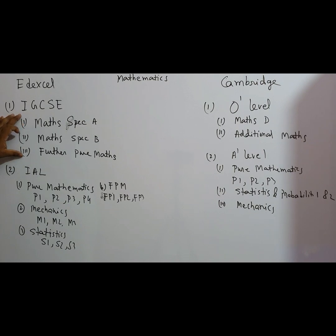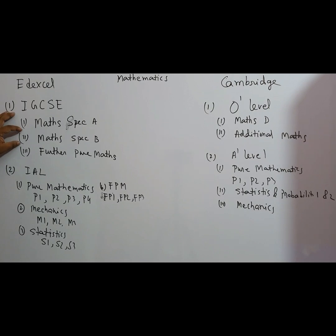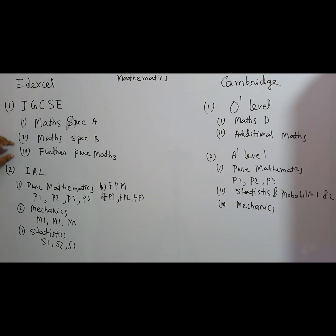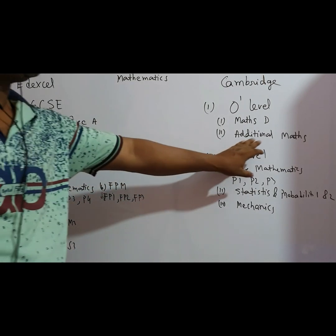It is not mandatory in IGCSE to study all three maths subjects. Those who are a bit weak can try maths specification A; those who can work harder can try maths specification B; and those who are more expert can try further pure maths. Further pure maths and additional mathematics are nearly the same weight.